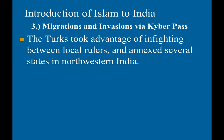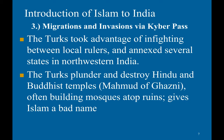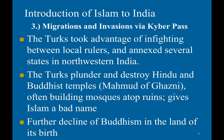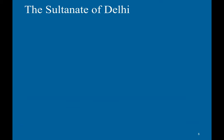There were also migrations of Central Asians via the Khyber Pass. The Turks took advantage of infighting between local rulers and annexed several northern states in the northwest of India. They plundered and destroyed Hindu and Buddhist temples. One of the most infamous leaders who did this was Mahmoud of Ghazni. They often built mosques atop the ruins, which gave Islam a bad name among the population and contributed to the further decline of Buddhism in the land of its birth.